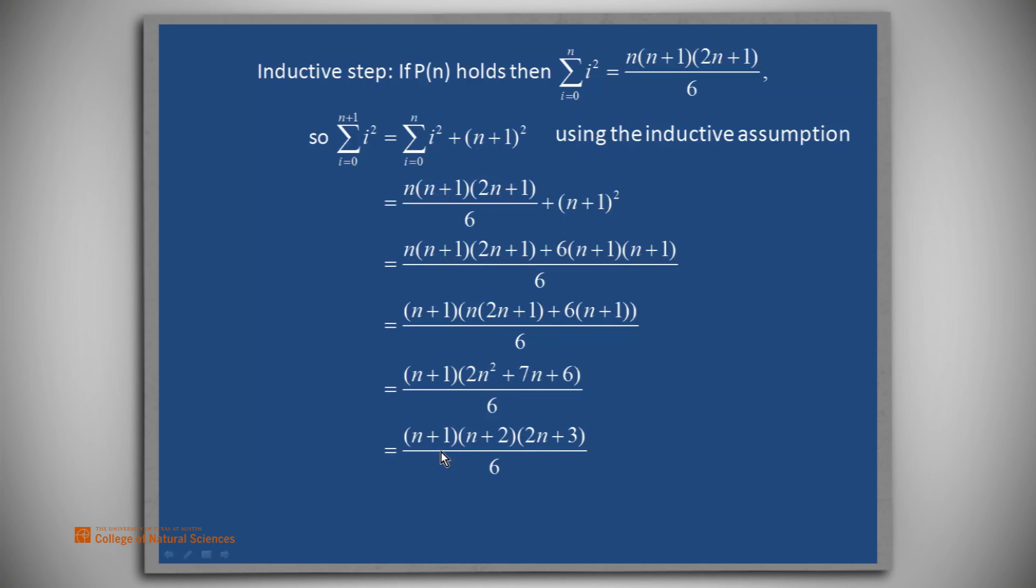Now, when we factor it, we see that we've got the n+1. Good. That's what we want. We have n+2, but we can think of that as (n+1)+1, and that's good.